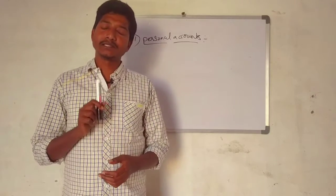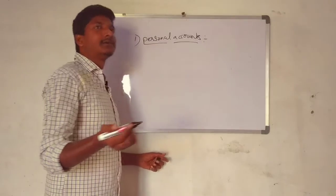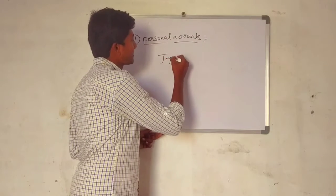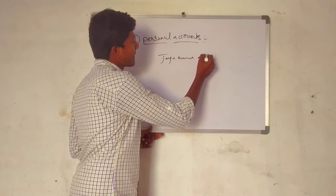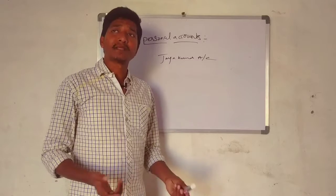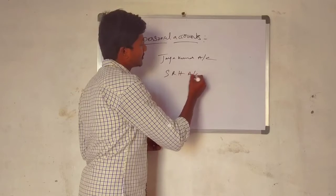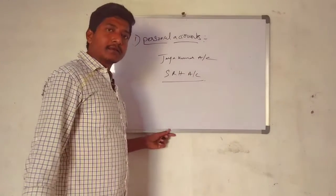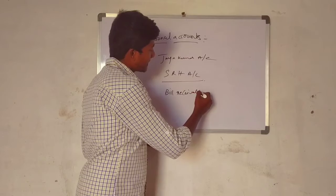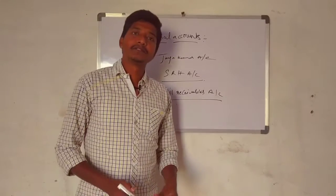In personal accounts, we have natural persons and artificial persons. An example of a natural person would be an individual like Mark. An example of an artificial person would be a company name, such as SRH account. Other examples include bills receivables account — these all come under personal accounts.